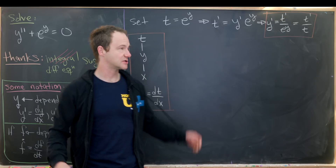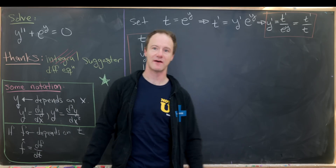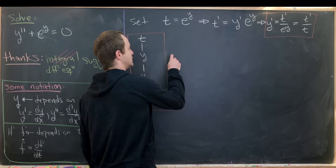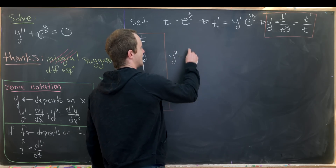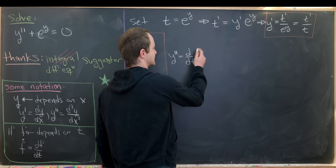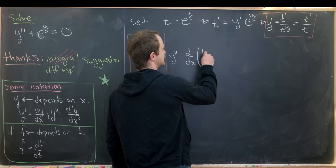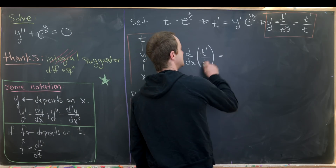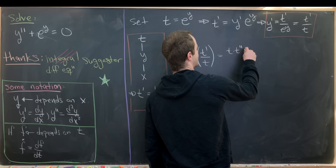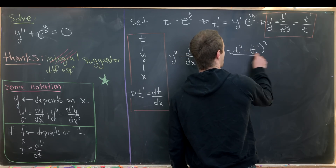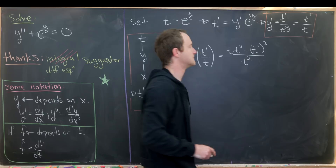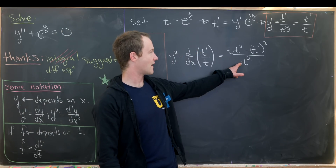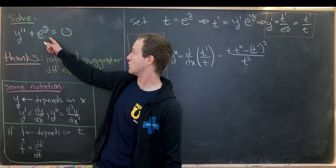Our differential equation is second order, so we need y double prime. Let's take the derivative of y prime to achieve y double prime. We have y double prime is the derivative with respect to x of t prime over t. Using the quotient rule, that gives us t times t double prime minus t prime squared, all over t squared.